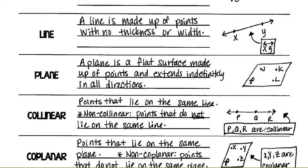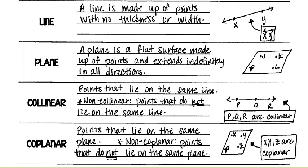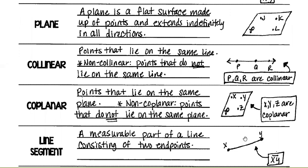Coplanar: points that lie on the same plane — similar to collinear. So coplanar points X, Y, and Z are on the same piece of paper. Now, this cursive P here is the name of a plane — that is how you identify it. If I ask the name of this plane and you say X, that's incorrect. It's P, usually denoted as a cursive letter.